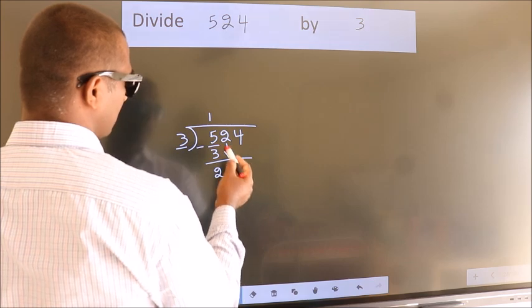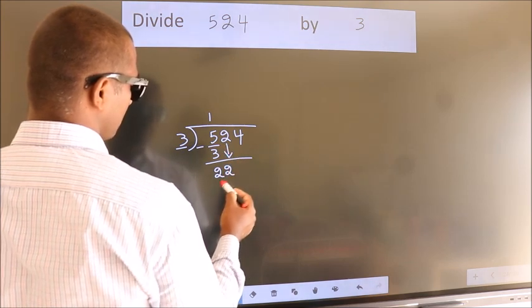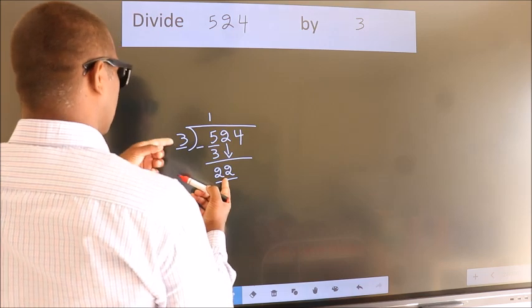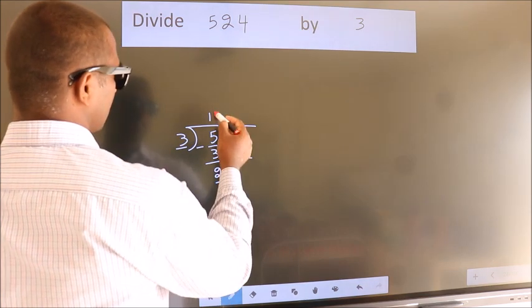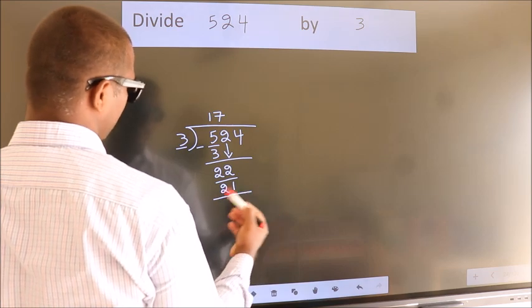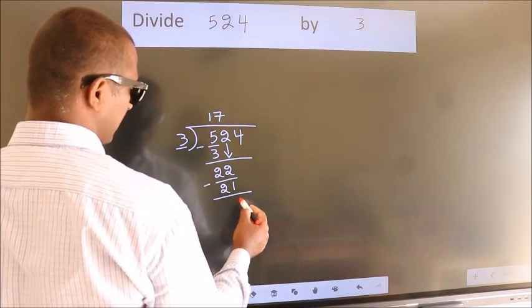After this, bring down the beside number. So, 2 down. So, 22. A number close to 22 in 3 table is 3 7s 21. Now, we subtract. We get 1.